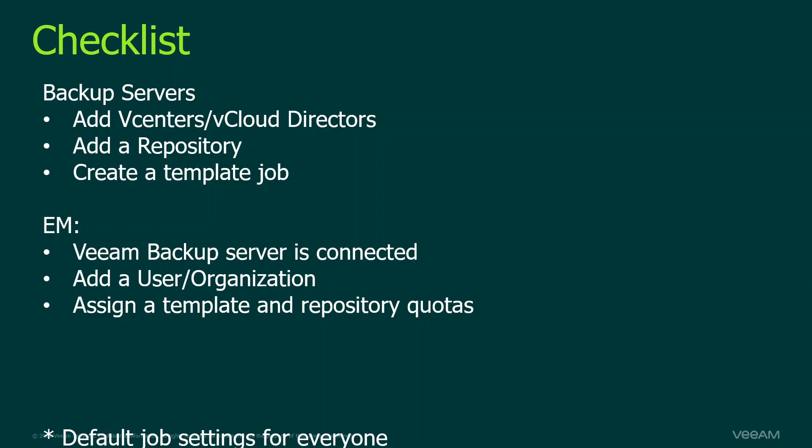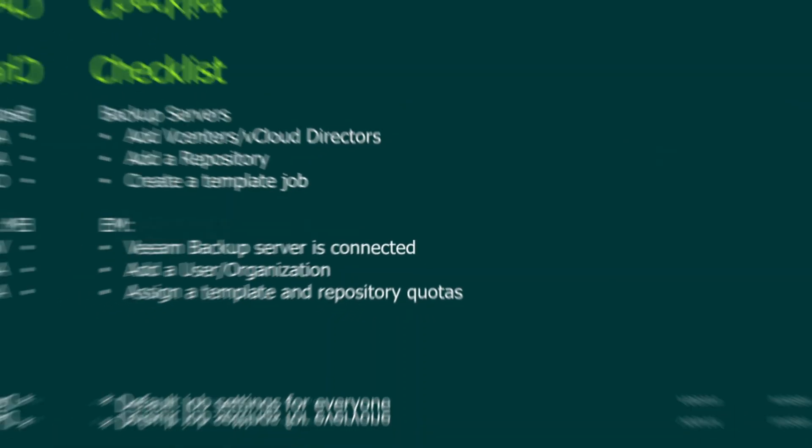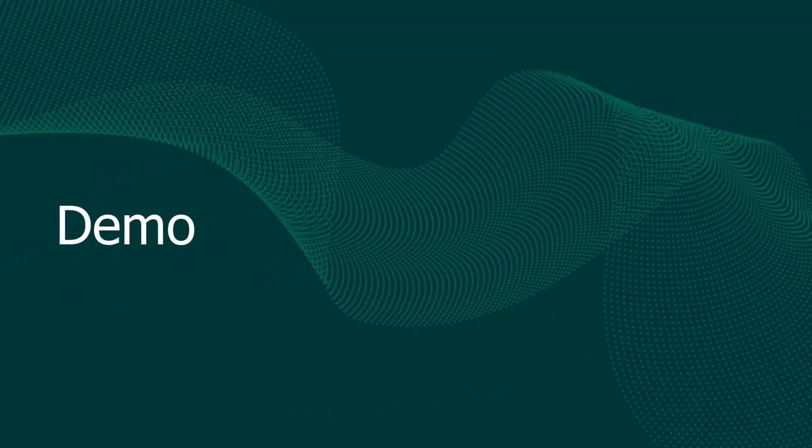These are the steps we are going to take when we configure Enterprise Manager. First, we need to make sure that the Veeam Backup server is connected and visible in the Enterprise Manager infrastructure. Then, according to our checklist, we will add a user or an organization and then assign the template and repository quota to it. Now, let's switch to the demo.